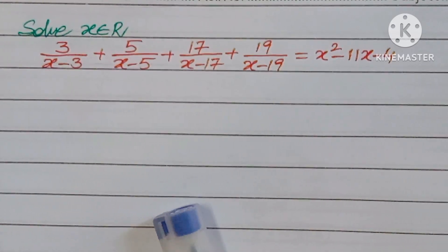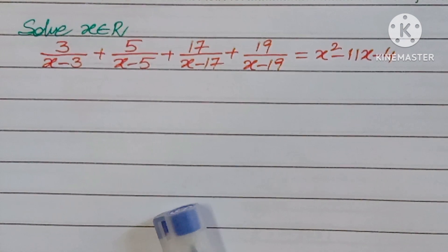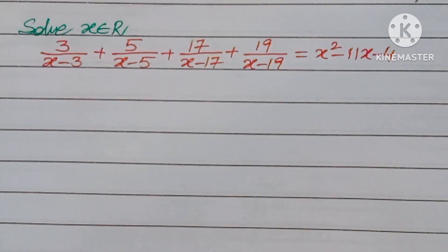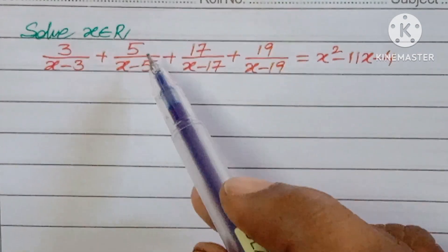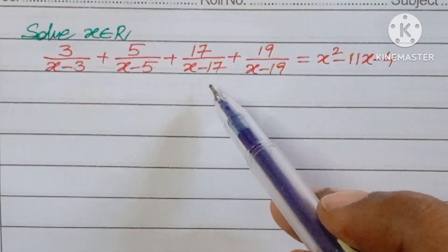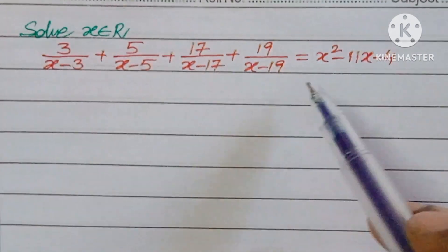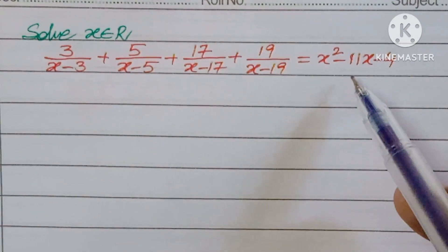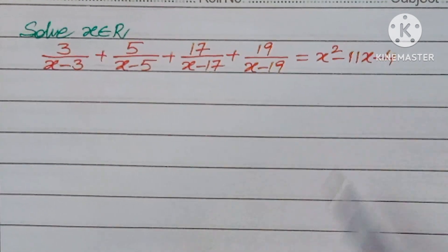Hello, welcome back to Ion CG Max. Today we are looking at an Olympic problem. The question is: given solve for x belonging to real numbers — 3 over (x minus 3) plus 5 over (x minus 5) plus 17 over (x minus 17) plus 19 over (x minus 19) equals x squared minus 11x minus 4.